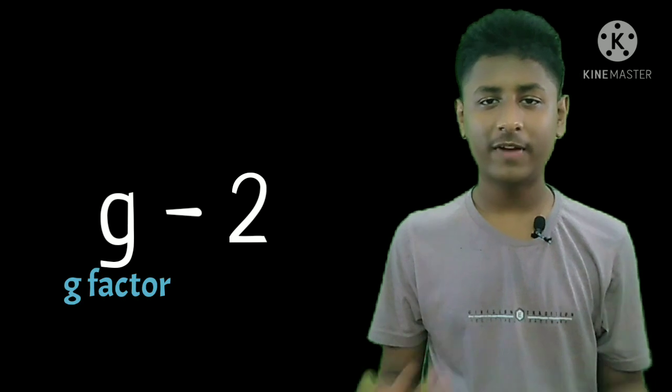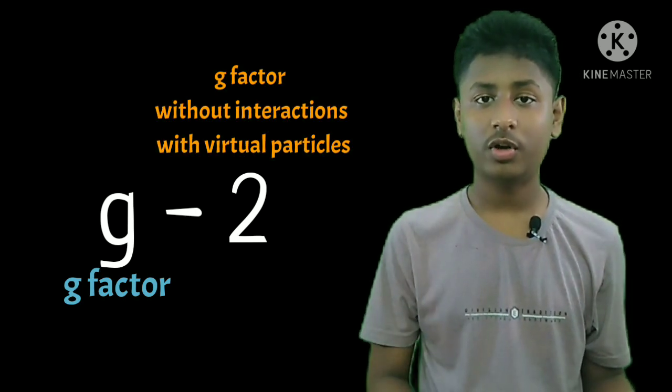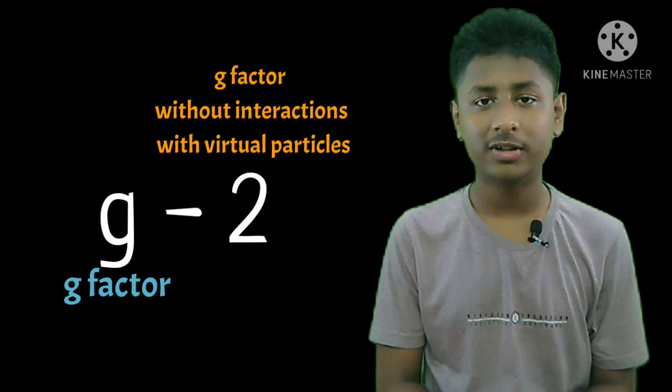That means muons also do not have a g-factor of exactly two. In the g-2 experiment, g refers to the g-factor without taking into account the interactions with virtual particles, and g-2 gives us the contribution to the g-factor from the interactions of virtual particles with the real particles.